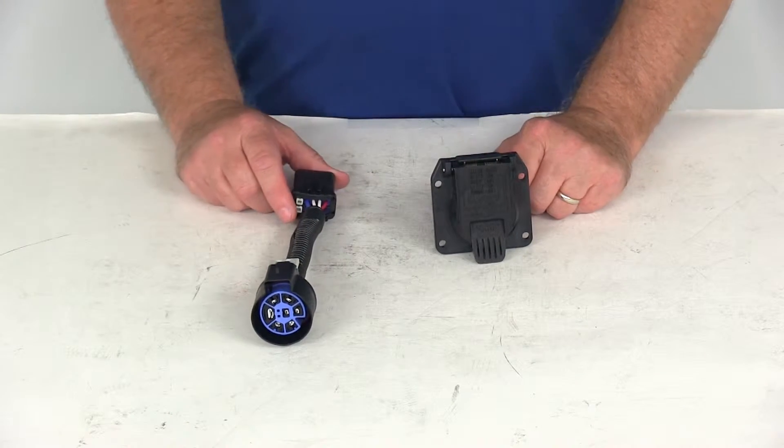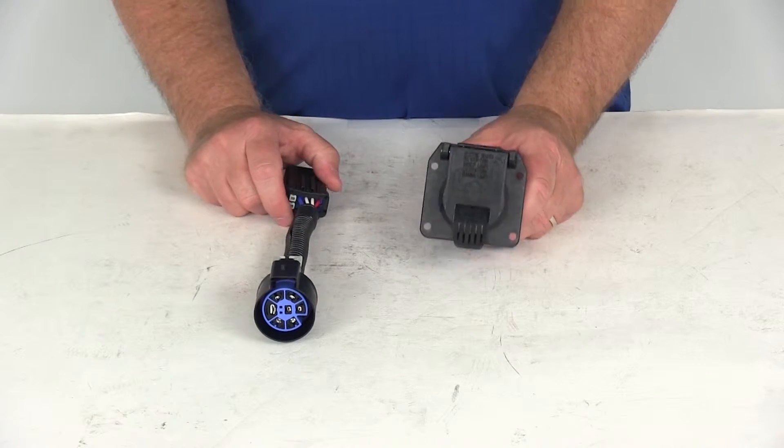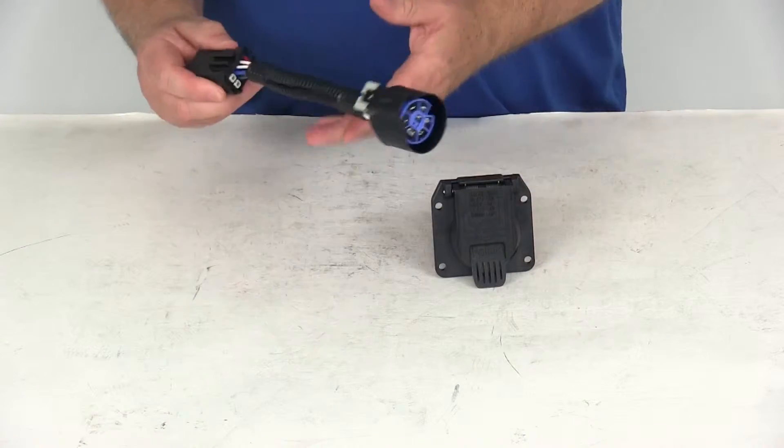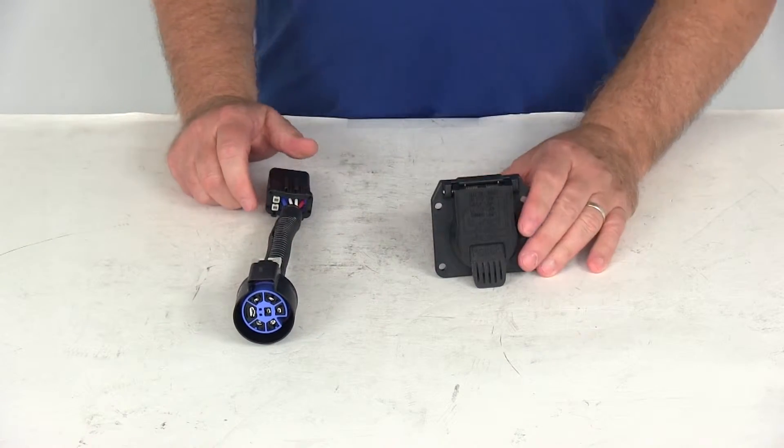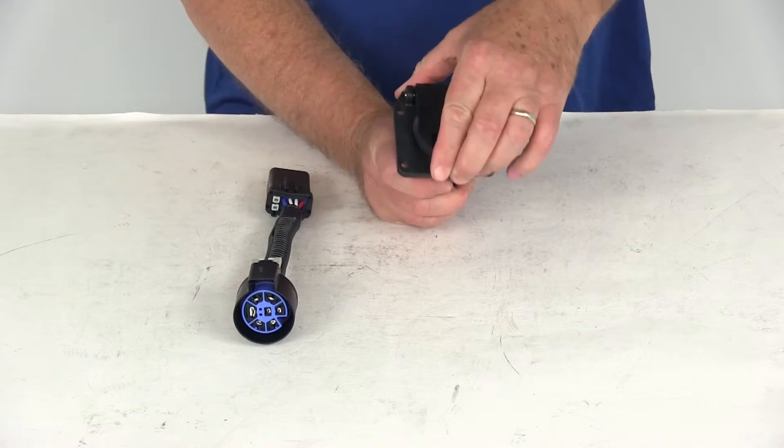Today we're going to review part number PK-11893-11933. This is the Pollock 7-way RV style trailer connector socket and the Dodge Chrysler OEM plug adapter. This part is a replacement 7-way sealed socket RV style trailer connector with an adapter.